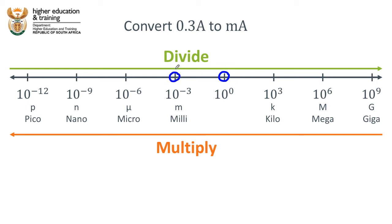In other words, we're moving in the multiply direction. So 0.3 amps, we have to multiply that by 10 to the power... What's the number of steps that we've taken? Well, from 0 to negative 3 is 3 steps, which is equal to...